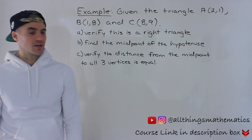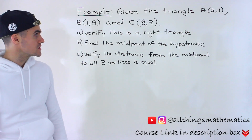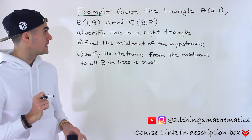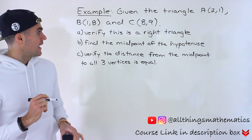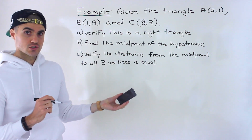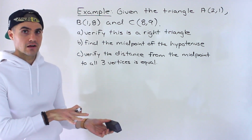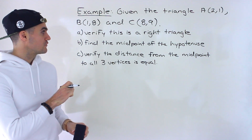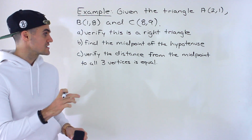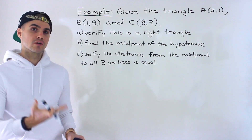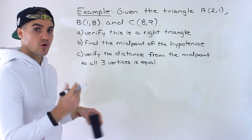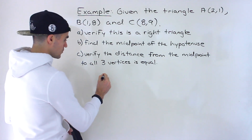Welcome back. We are given a triangle with vertices at A(2,1), B(1,8), and C(8,9), and we have a few questions dealing with this triangle. Part A: verify it is a right triangle containing a 90-degree angle. Part B: find the midpoint of the hypotenuse. Part C: verify the distance from that midpoint to all three vertices is equal. This is actually a property of all right triangles that we're going to show here.